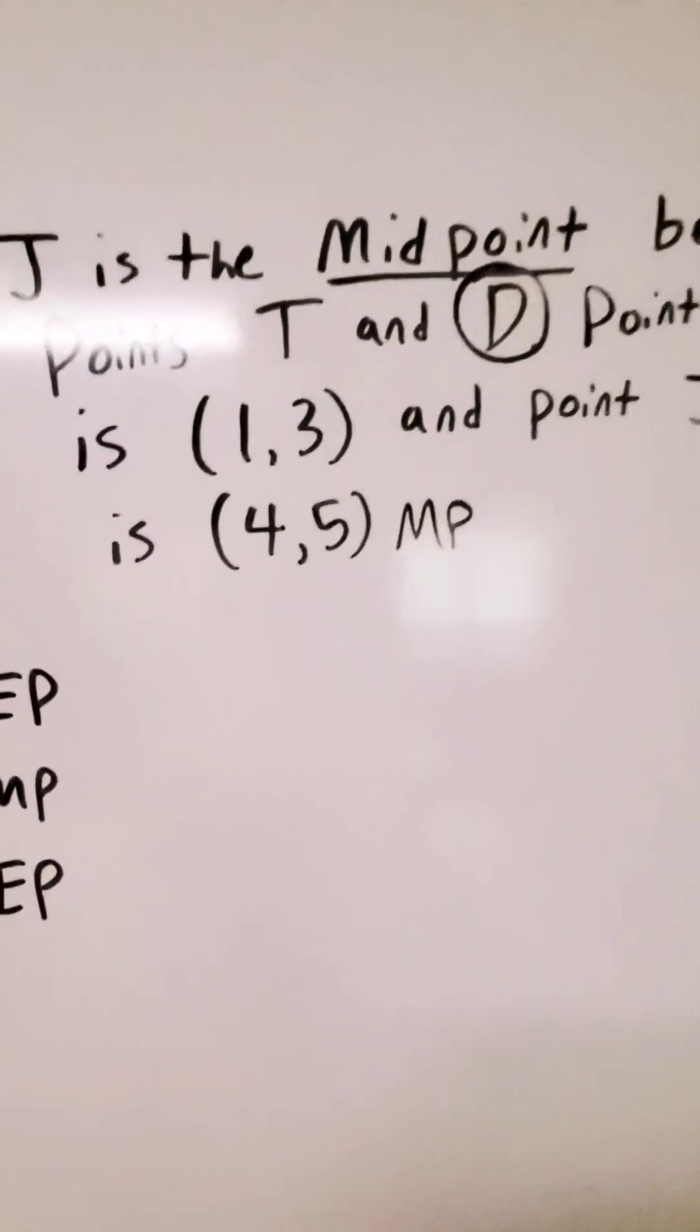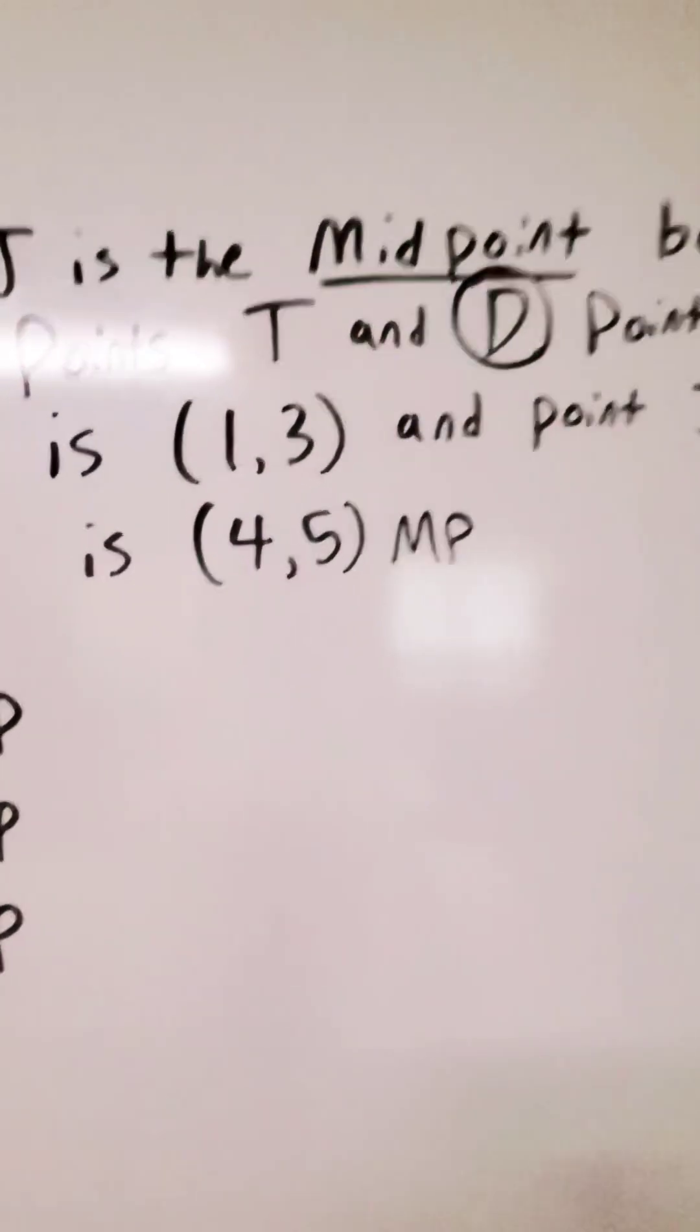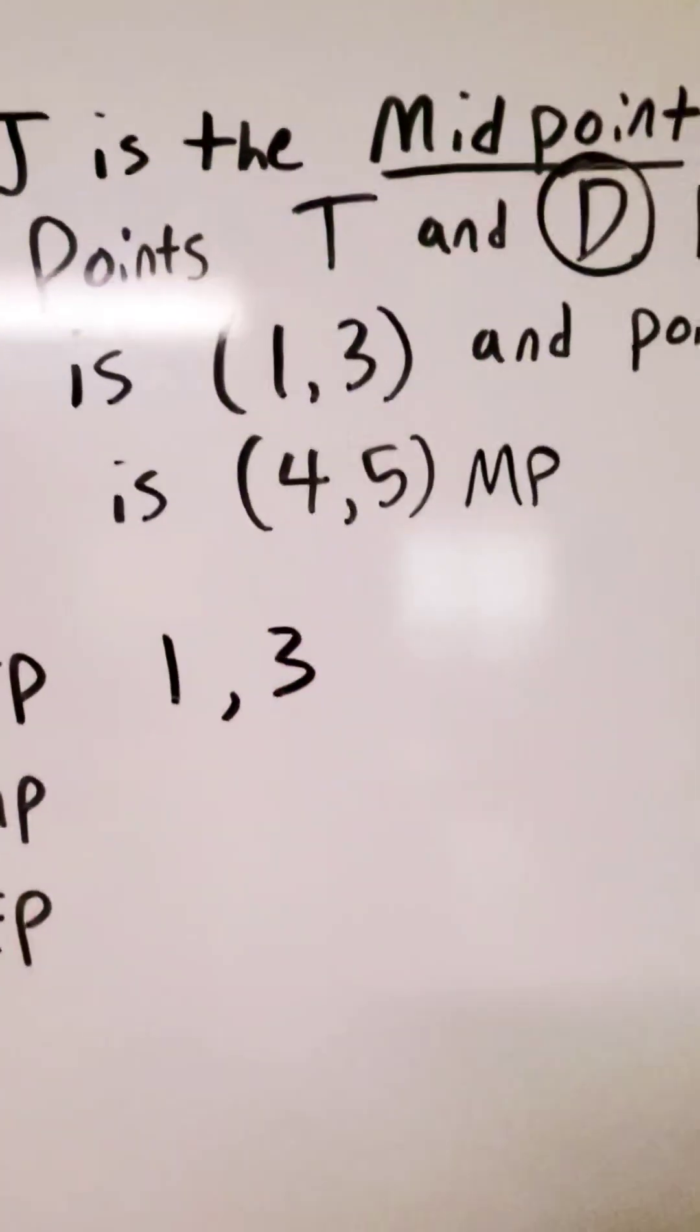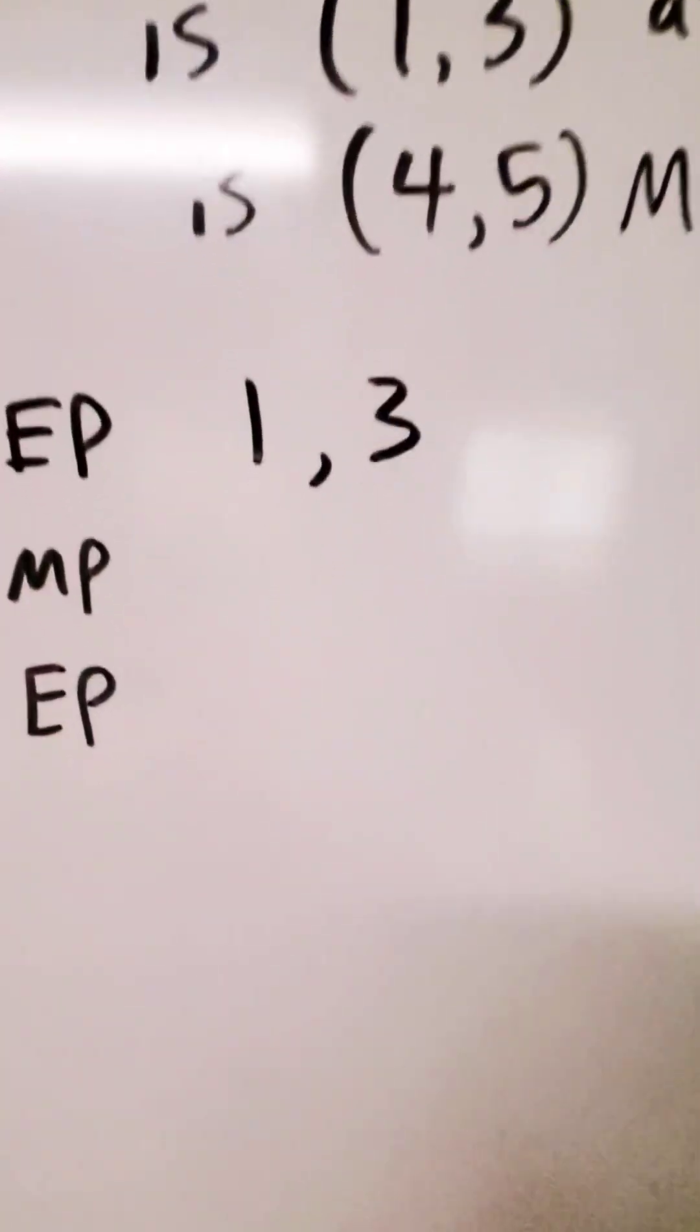We know one of the endpoints. The endpoint T is 1, 3. So I'm going to put 1, 3 right here, and we know the midpoint, which is 4, 5.